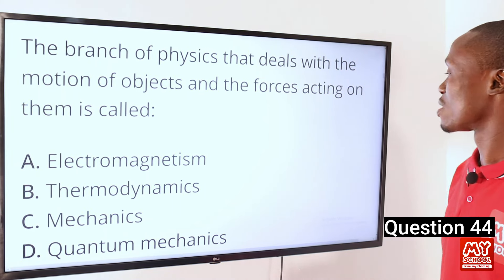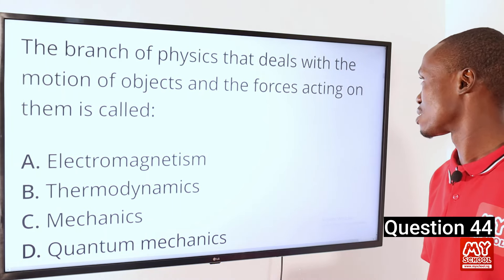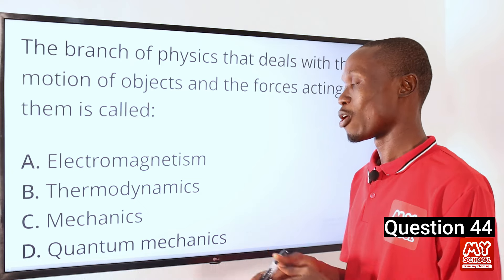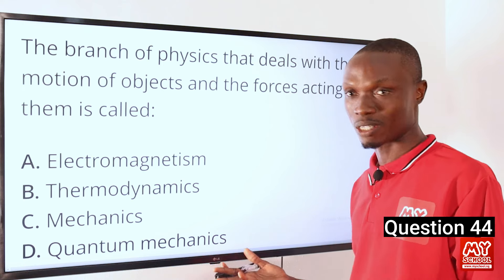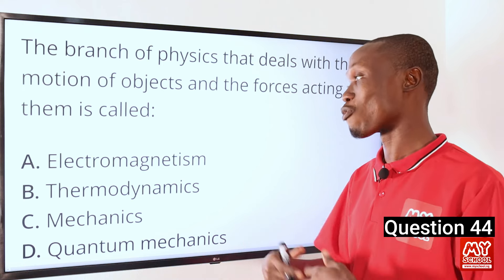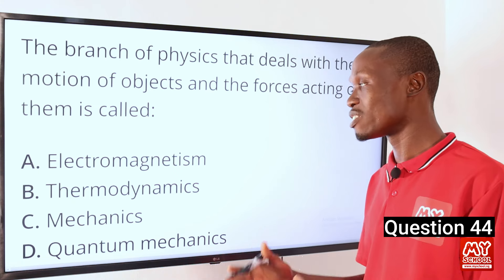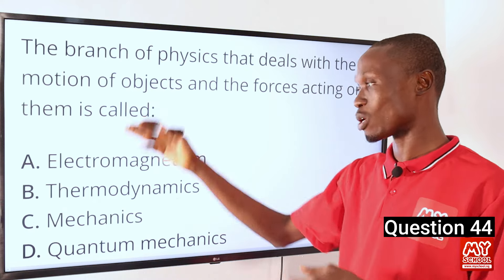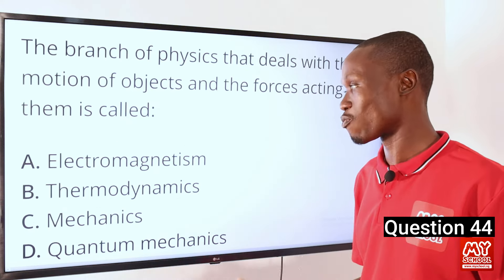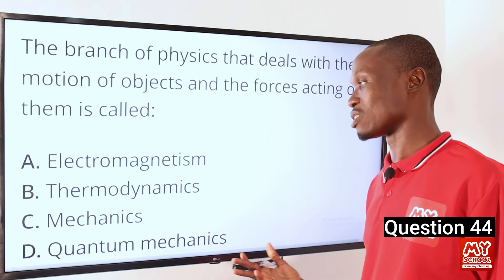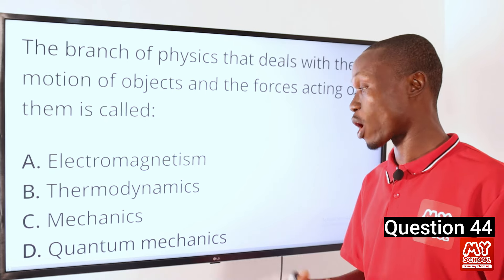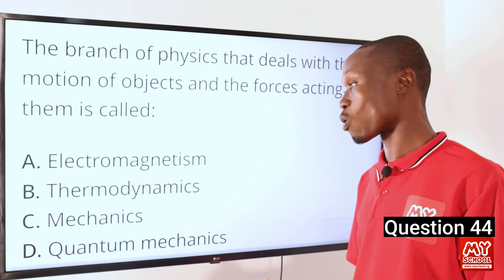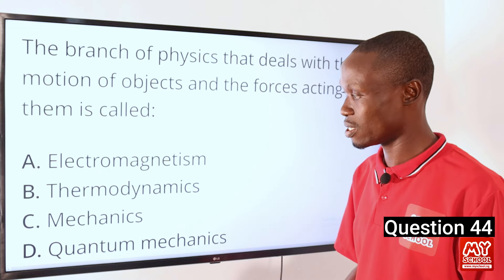Question 44. The branch of physics that deals with the motion of objects and the forces acting on them is called what? Electromagnetism shows the relationship between magnets and electricity. Option B deals with energy and work of a system. Option C, mechanics, actually describes the question — it is the branch of physics that deals with the motion of objects and the forces acting on them. Option D, quantum physics, has to do with matter and light on the atomic and subatomic scale. The answer is option C, mechanics.